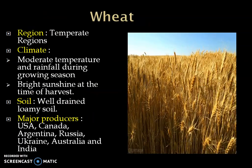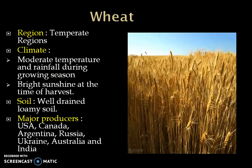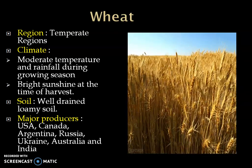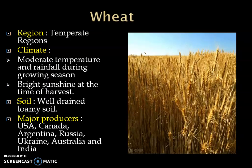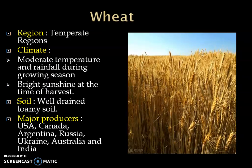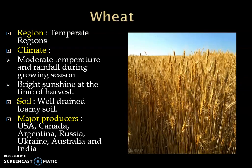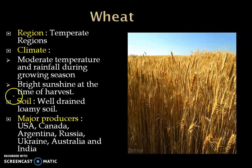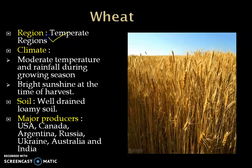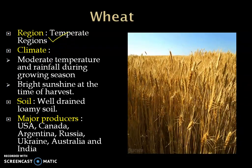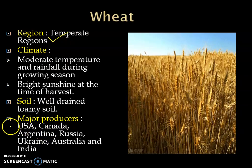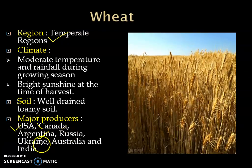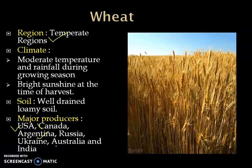Wheat is the second most important food crop of India. Our country became self-dependent in wheat production due to the green revolution, which was introduced in 1960. It grows well in temperate regions. The major producing countries are USA, Canada, Argentina, Russia, Ukraine, Australia, and India.